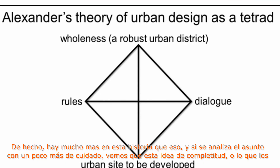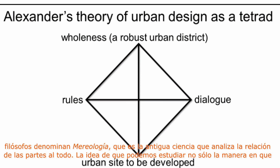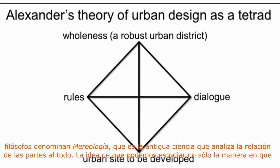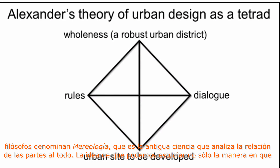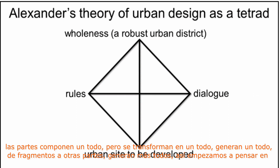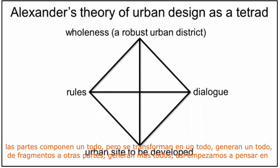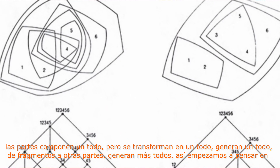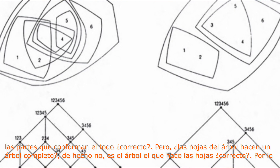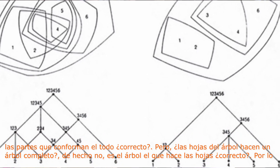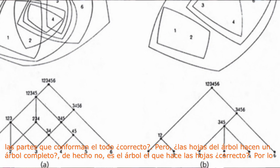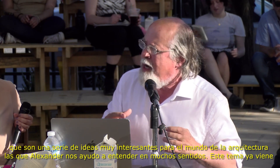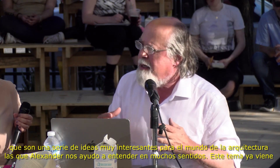If you look more carefully, you see this idea of wholeness — or what philosophers call mariology, the ancient topic of part-whole relations. The idea that we can study the way that parts are not only composed into wholes, but transform into wholes, generate wholes, fragment into other parts, generate more wholes. You think about the parts that make the whole — but do the leaves make the tree? Actually, the tree makes the leaves. Alexander, in many ways, helped us to unpack these ideas in the world of architecture.